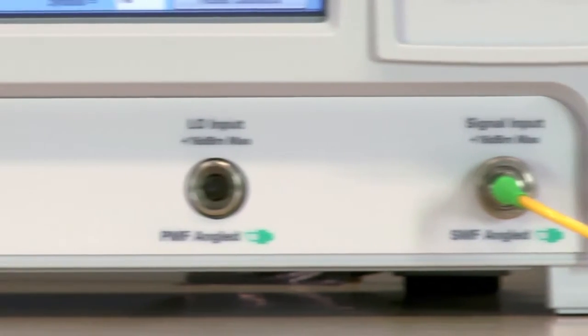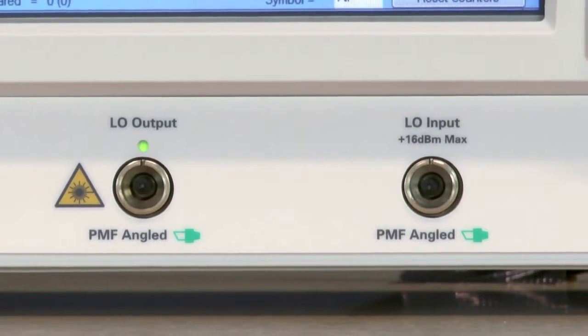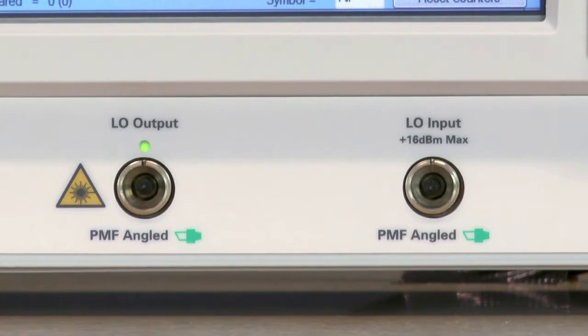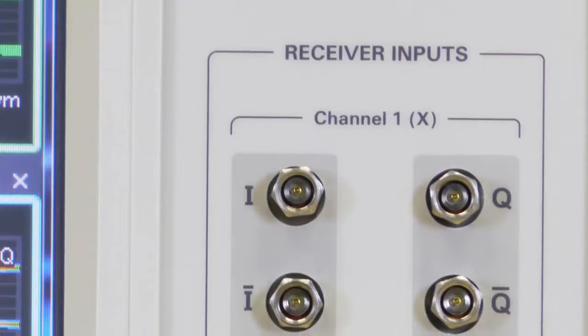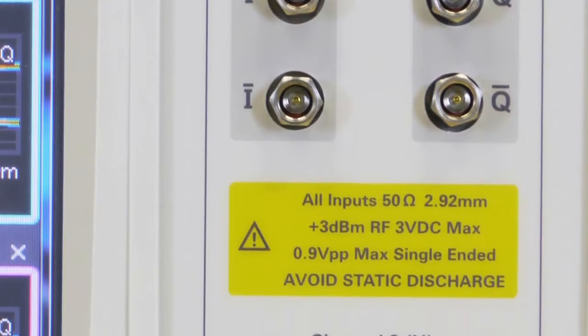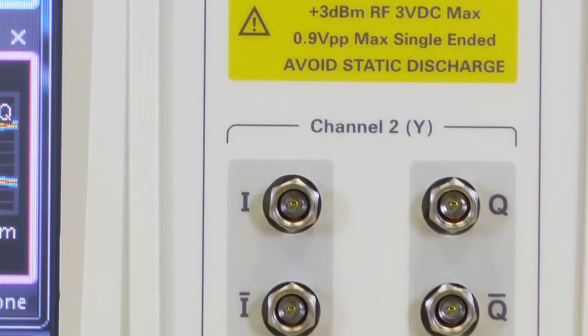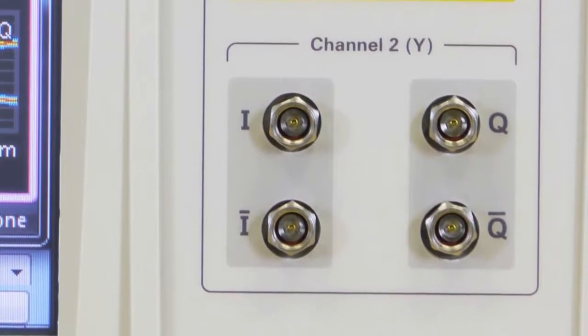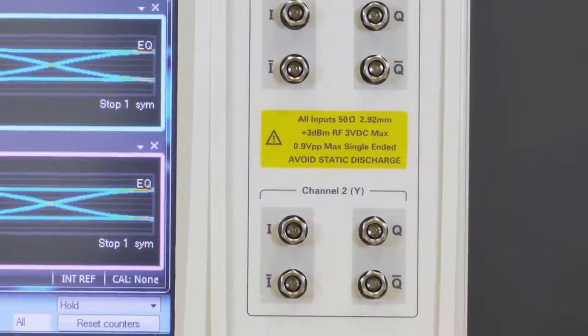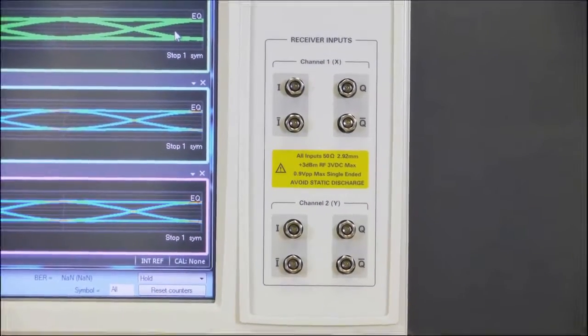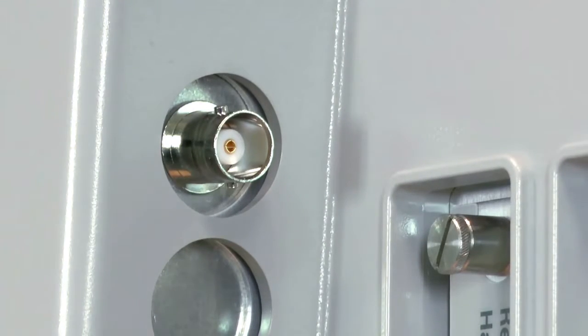What you might not have expected is the additional digitizer with four differential RF inputs to connect an external integrated coherent receiver as specified for tests by the Optical Internet Networking Forum. It also has a trigger for recirculated loop testing as well as the usual PC connections to simplify remote control using the familiar SCPI interface.